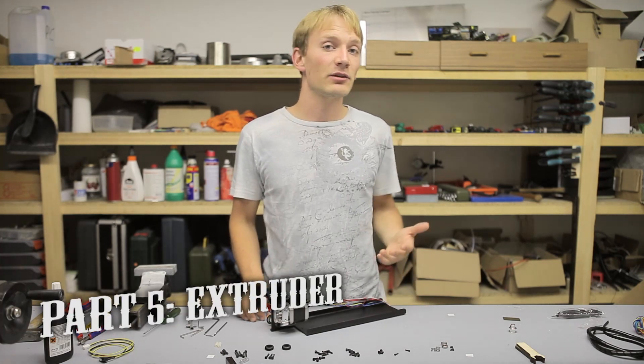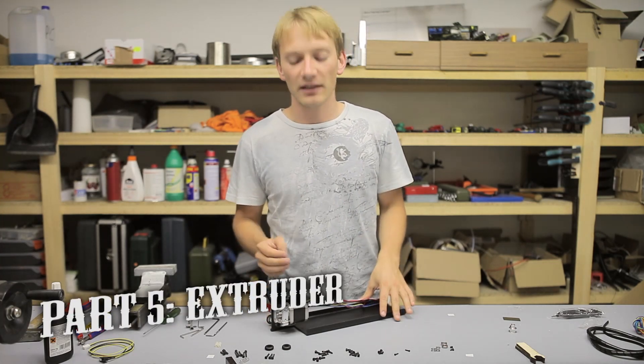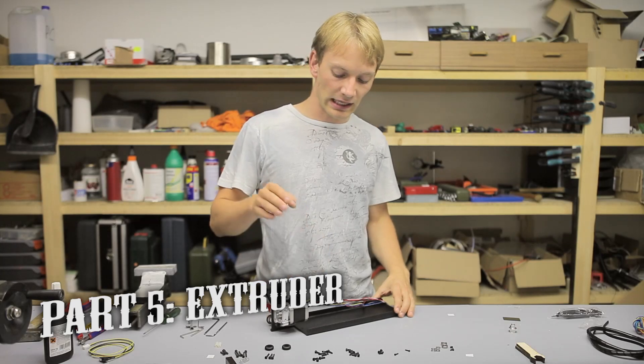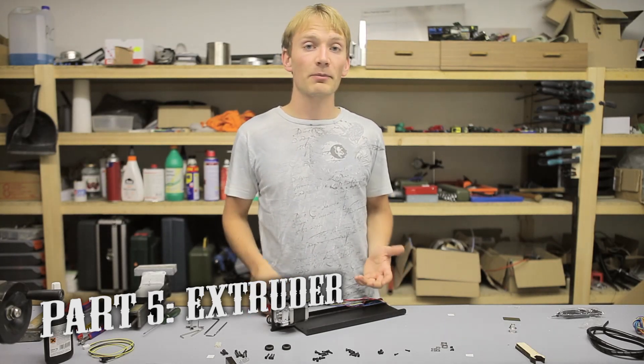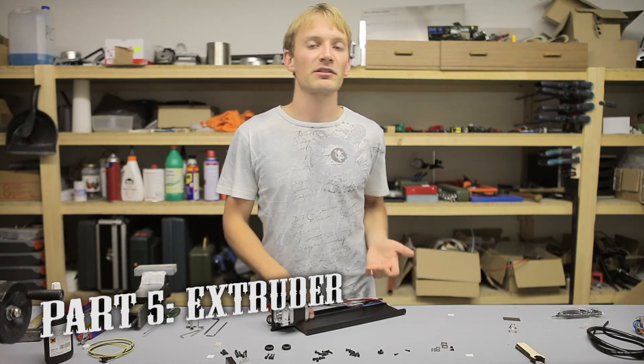I'm Tom and this is my sixth video for the Printrbot Simple Metal kit. In the last video we took a look at how to assemble the extruder and the hotend, and in this video we're going to finish up the y-axis and attach it to the rest of the printer.